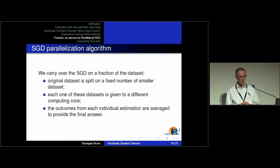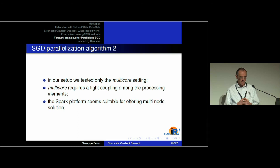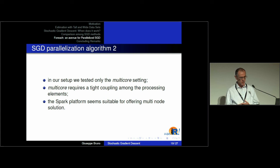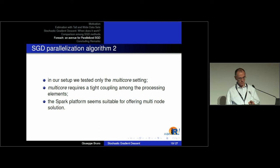We carry out stochastic gradient descent on a fraction of the dataset. The original dataset is split into a fixed number of smaller datasets, we run the gradient descent on each of these datasets, and then we average the total results. In our setup we tested only the multi-core setting using just one node. I worked on a node with 40 cores — 20 physical cores and 40 hyper-threaded cores. I started working with the Spark platform but have not yet provided a benchmark; however, it is possible to extend the procedure to the Spark platform.